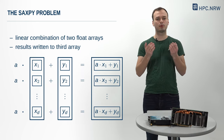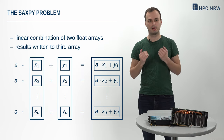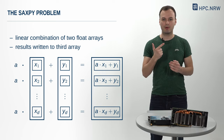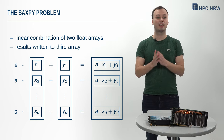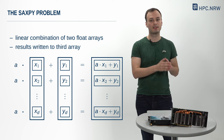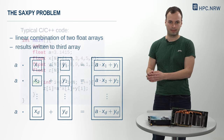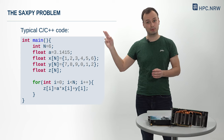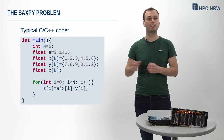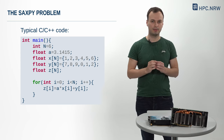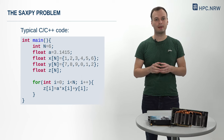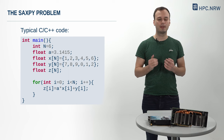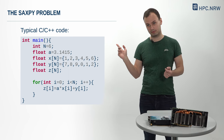But first, let's quickly recap what a SAXPY looks like. We have to copy two arrays to the device memory, compute A times X plus Y there, and then copy back the results. In CPU-only code, shown here, this is quickly done since we do not need any copies. To implement GPU offloading, we only need to add a few OpenMP directives to this code.